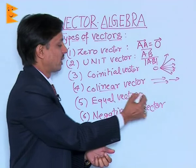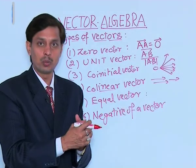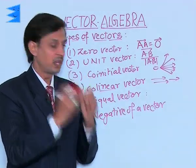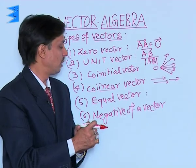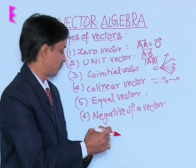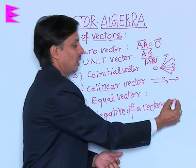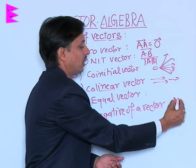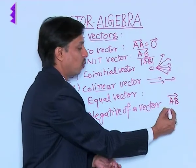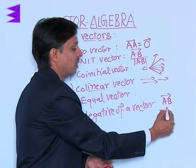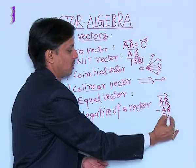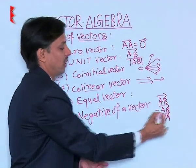Equal vectors: two vectors are said to be equal if they are equal in magnitude and same in direction. The negative of a vector — if there is a vector AB, its negative will be minus AB, which can be written as vector BA.